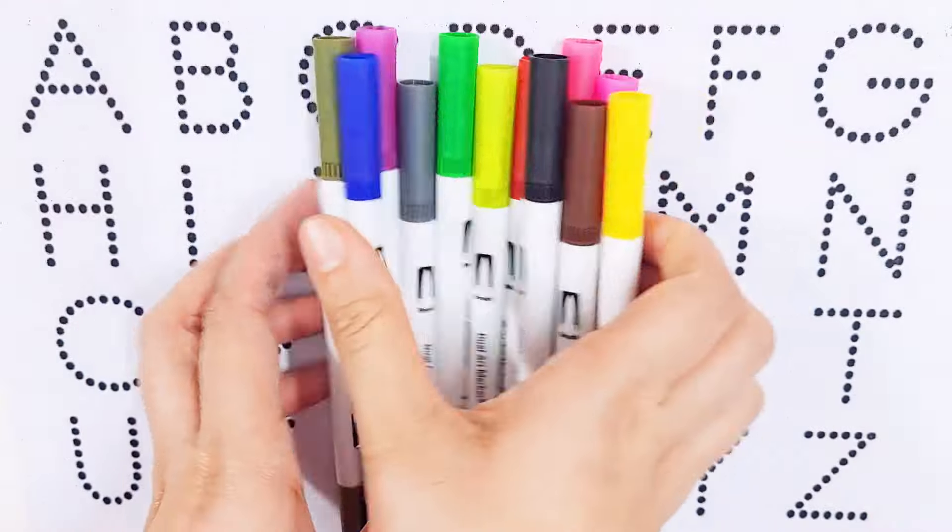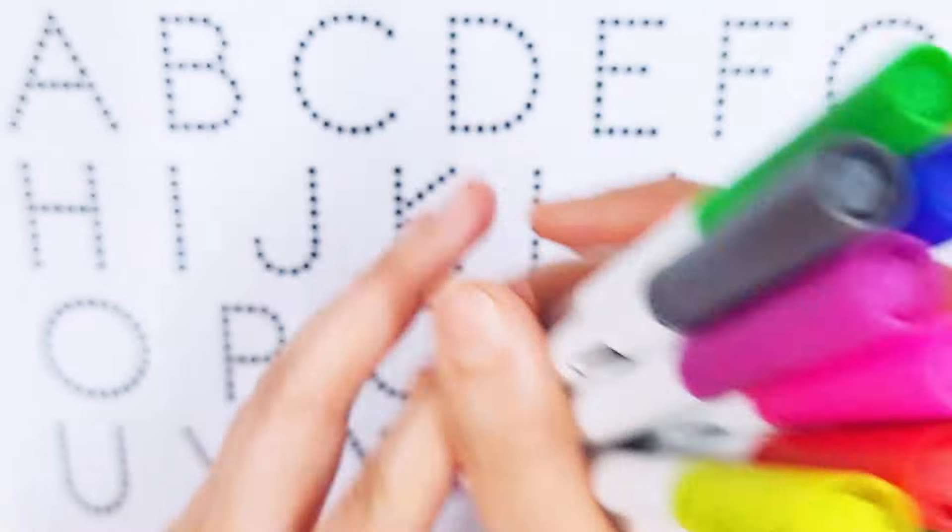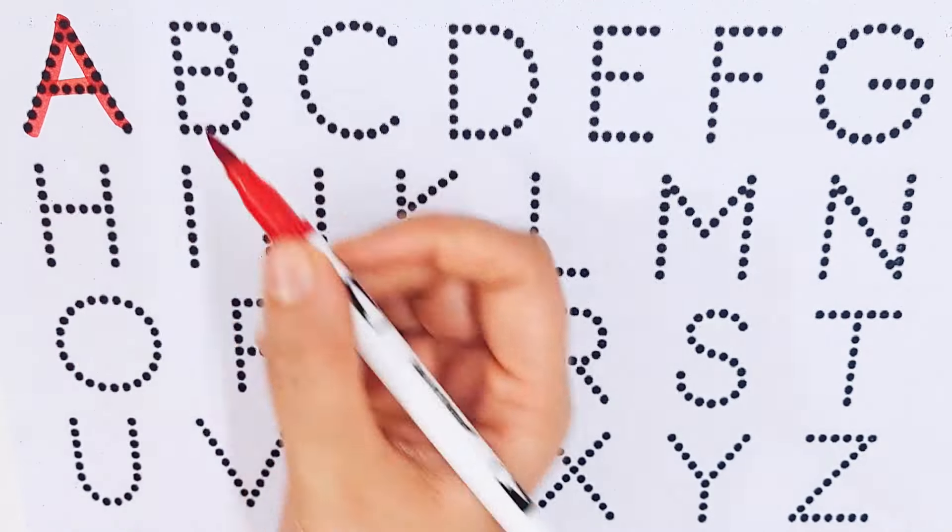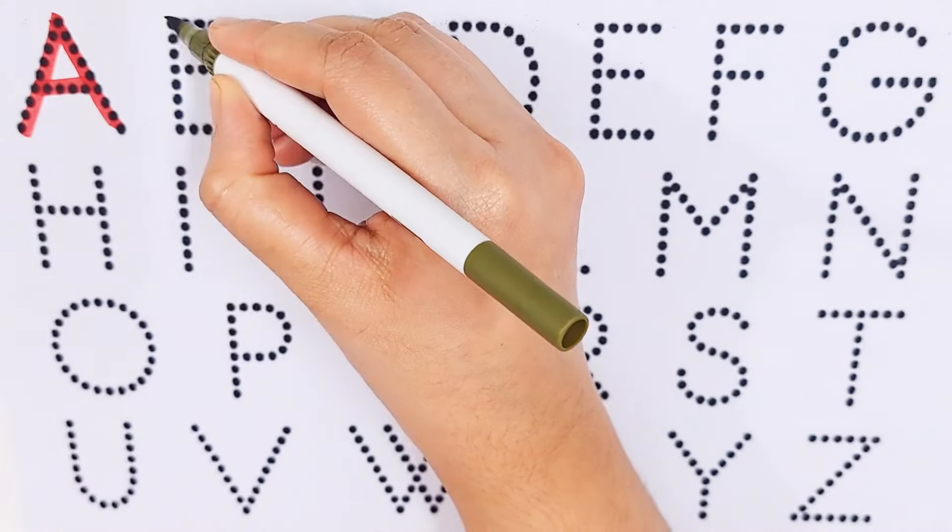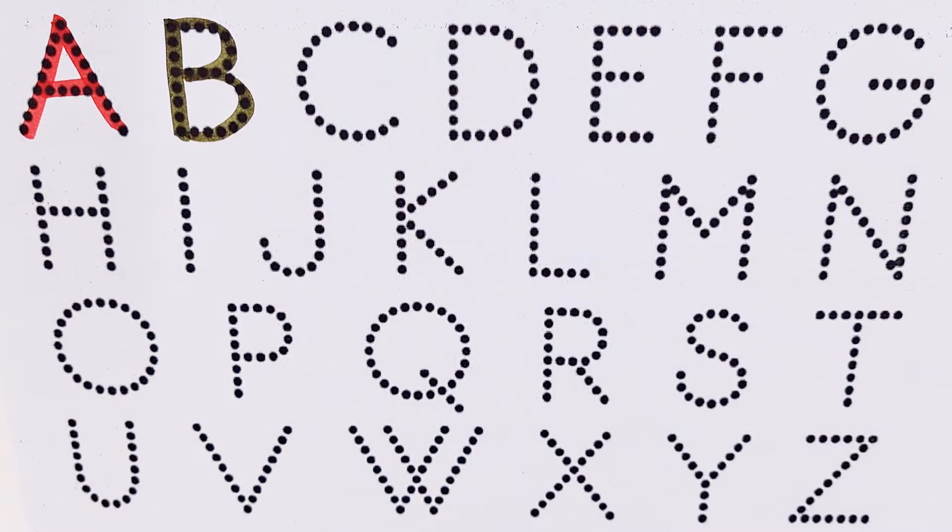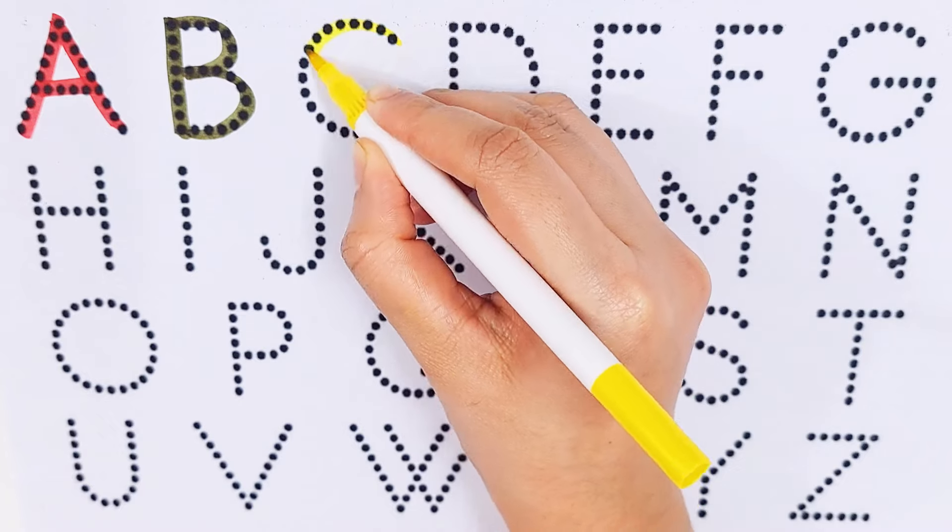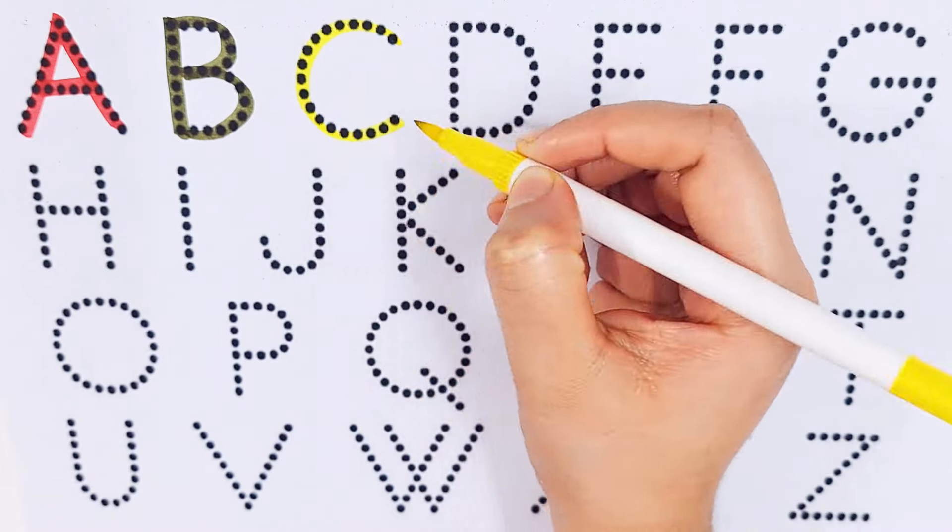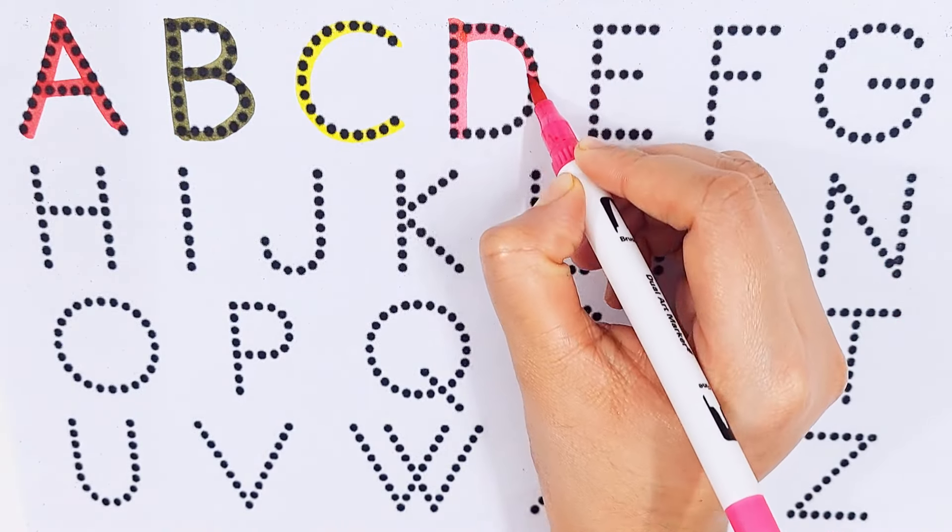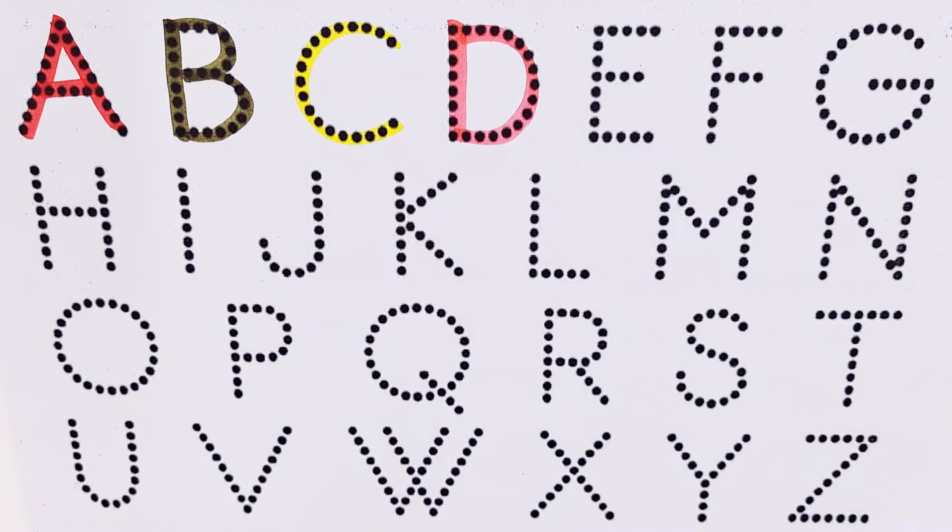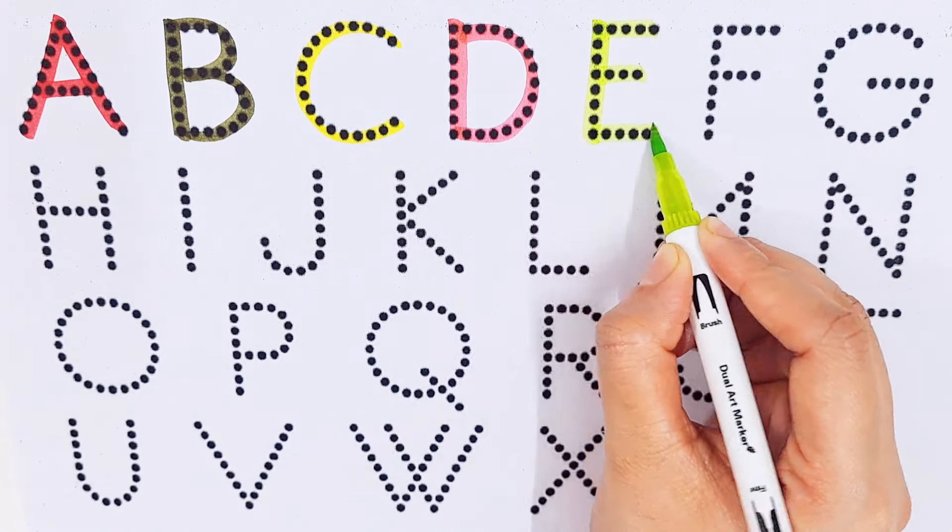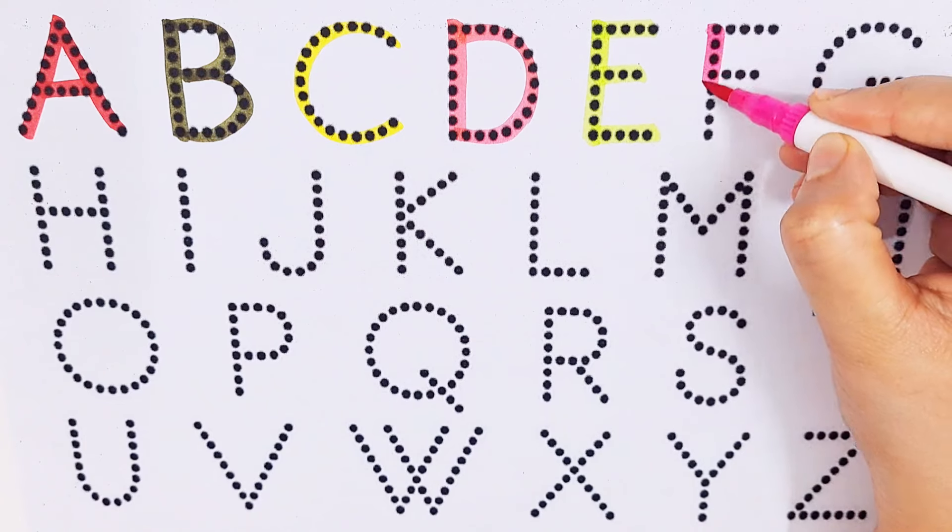A, A for arrow. B, B for box. C, C for chocolate. D, D for duck. E, E for yarn. F, F for flowers.